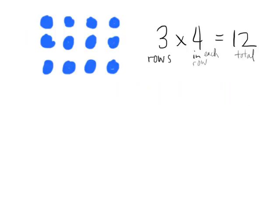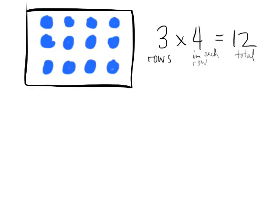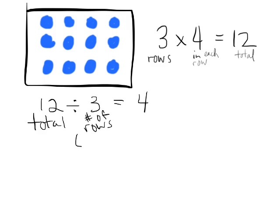For example, if we take a look at this array right here, we've got three rows and four dots in each row, giving us a total of 12. So we've got 3 times 4 equals 12. So if we wanted to write a division problem based on this array, well we could write 12 divided by 3 equals 4, and that would mean we have 12 total, and then 3 would equal the number of, in this case rows, but in previous lessons we would have called this the number of groups, and then there's 4 in each group.